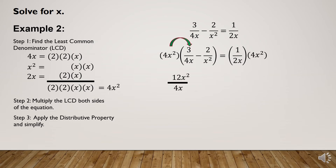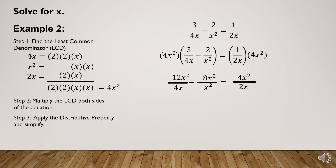Then 4x² × (-2) gives -8x² over the denominator x². On the right side, 4x² × 1 gives 4x² over the denominator 2x. We only multiply the LCD to the numerator of each term, then copy the denominator.